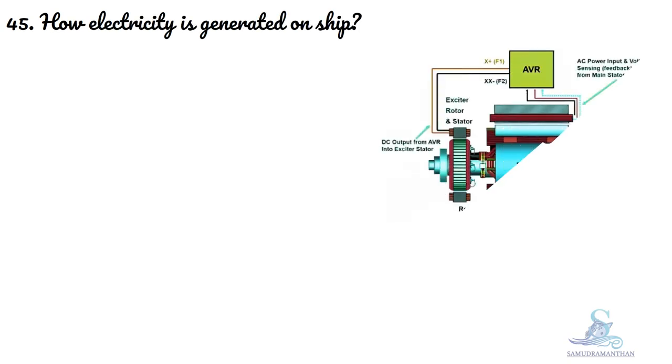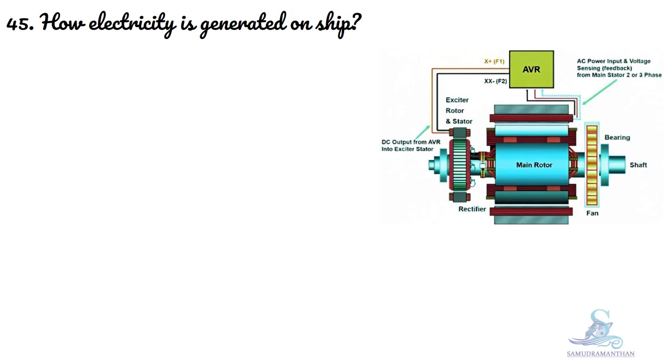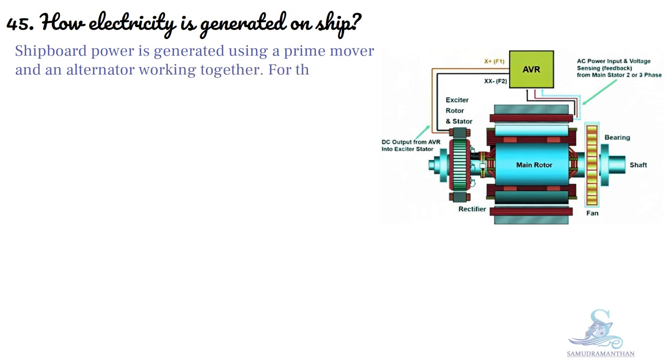How electricity is generated on ship? Shipboard power is generated using a prime mover and an alternator working together. For this, an alternating current generator is used on board.